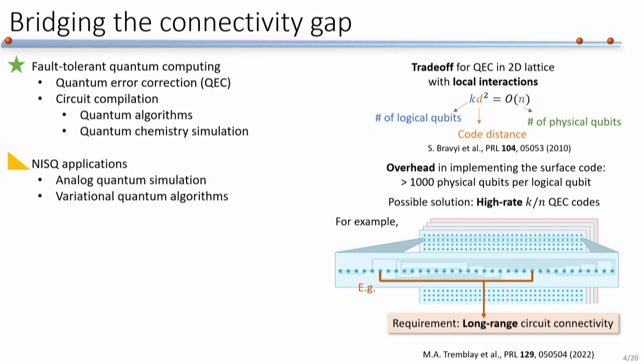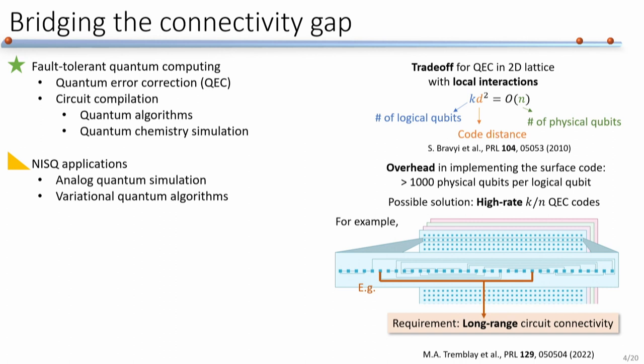Before reaching that goal, we can also consider NISQ-era applications, and one of the most important is analog quantum simulation. If we have longer-range connectivity, it enables us to explore a wider range of Hamiltonians that can simulate interesting phases of matter. For variational quantum algorithms, people have also shown that tunable-range connectivity requires smaller circuit depth to reach the ground state at high fidelity. So we have strong motivation for achieving higher connectivity in superconducting circuits.